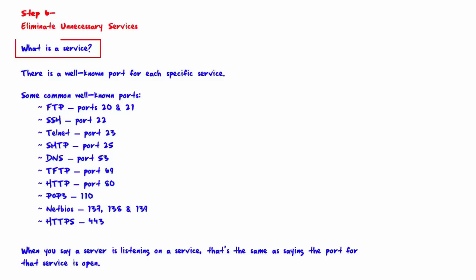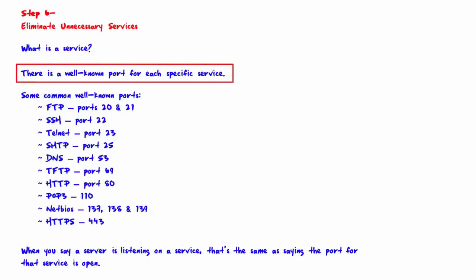What is a service? If there is a public web server, that server needs to be listening on the HTTP service for remote clients to connect to it. Similarly, a public DNS server needs to be listening on the DNS service. When we say a server is listening on a specific service, we mean it will allow remote clients to connect to that service. If a server is not listening on a service and a remote client tries to connect, the server will ignore the request and the connection will fail.